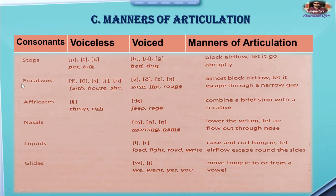Here is another kind of manner of articulation: those sounds are known as fricative sounds, such as 'f', 'v', 'th', 'sh'. These almost block airflow and let it escape through a narrow gap. So when we pronounce fricatives, we block the airflow and it escapes through a narrow gap, as in the sound in 'rough'.